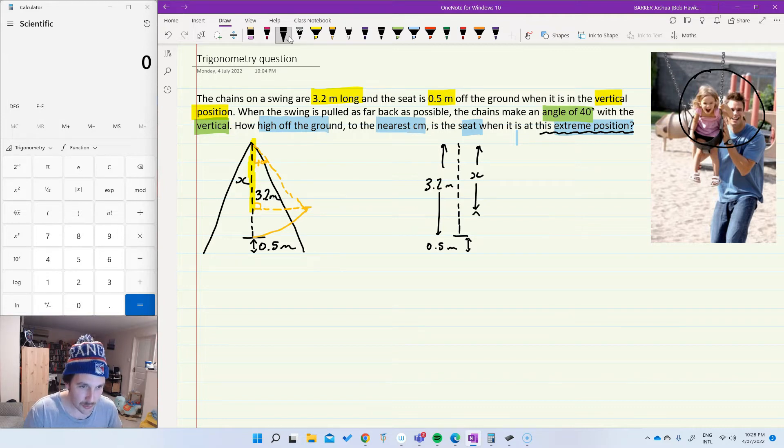What that's going to leave us with between here and here, that is going to be the difference between 3.2 and whatever we figure out X to be, which means the height off the ground of this brave little girl is going to be 0.5 meters plus 3.2 meters, take away whatever we find X to be.